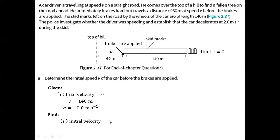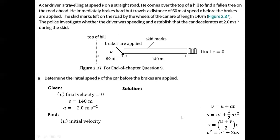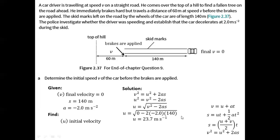We are asked to find the initial velocity. Looking at the four equations of motion, all four contain the initial velocity, but three of them contain time. Since time is not yet known, we use the fourth equation. Manipulating this equation to solve for the initial velocity, we have the square root of v² minus 2as. Substituting the given values, we obtain the initial velocity to be positive 23.7 meters per second, so the initial speed is 23.7 meters per second.